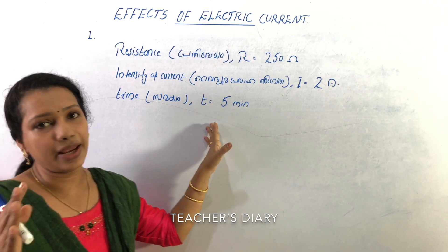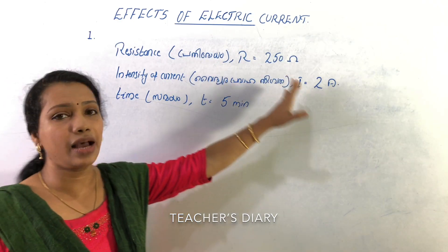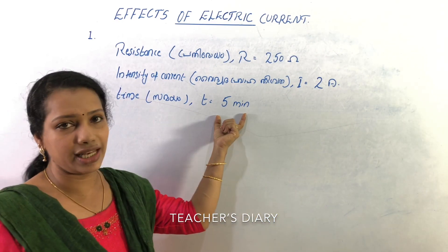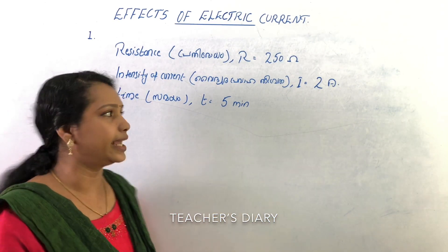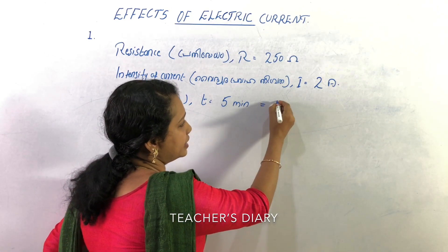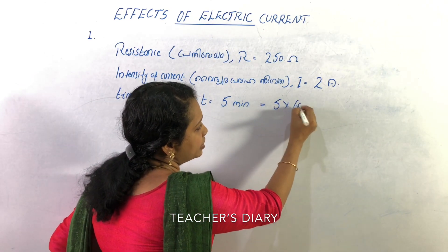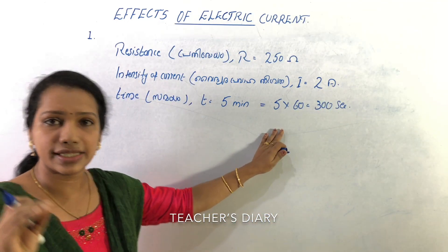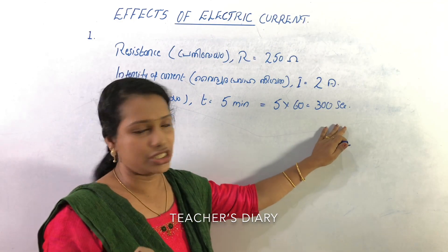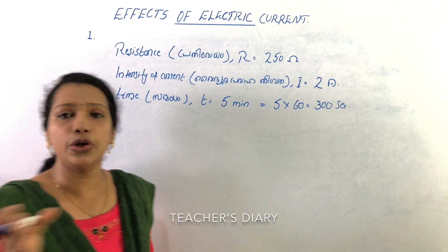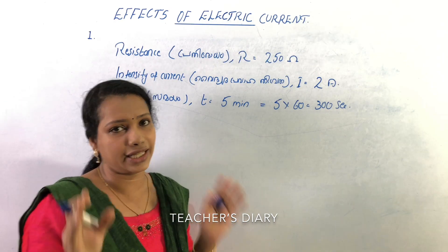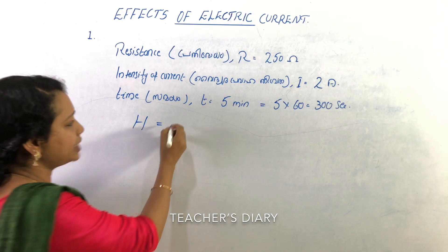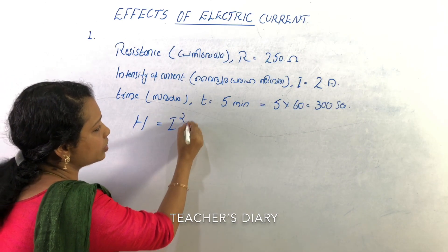Time is 5 minutes. We will work in SI units. We will convert minutes to seconds. 5 minutes is 5 into 60, that is 300 seconds. The equation for heat produced is H is equal to I squared R T.